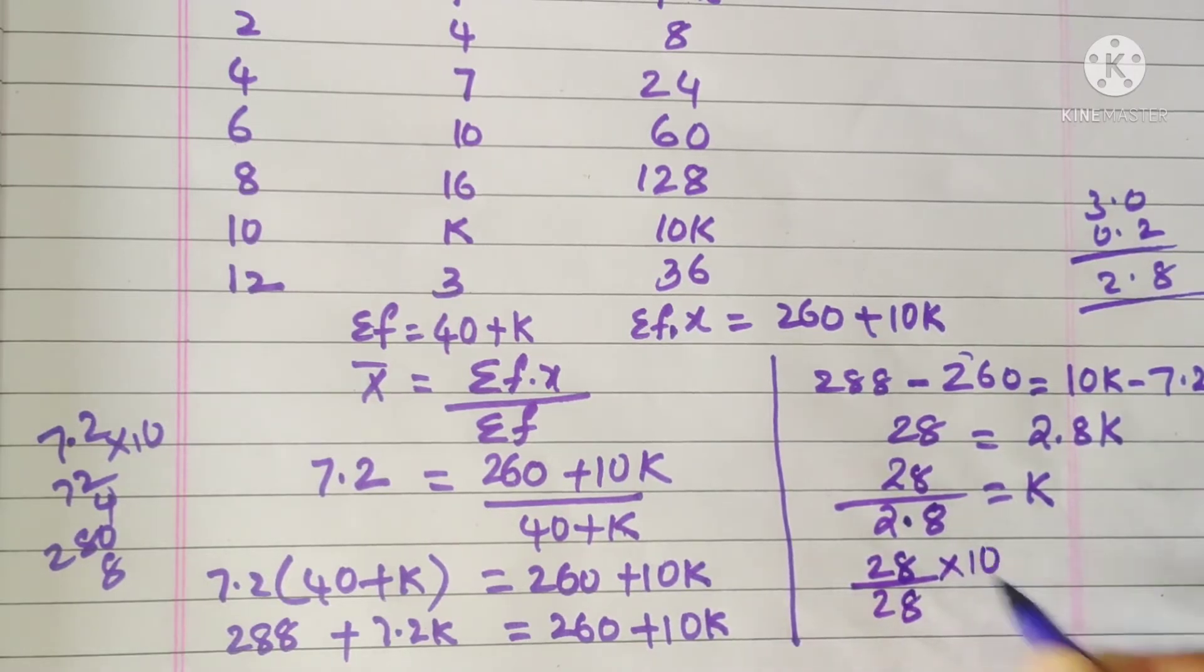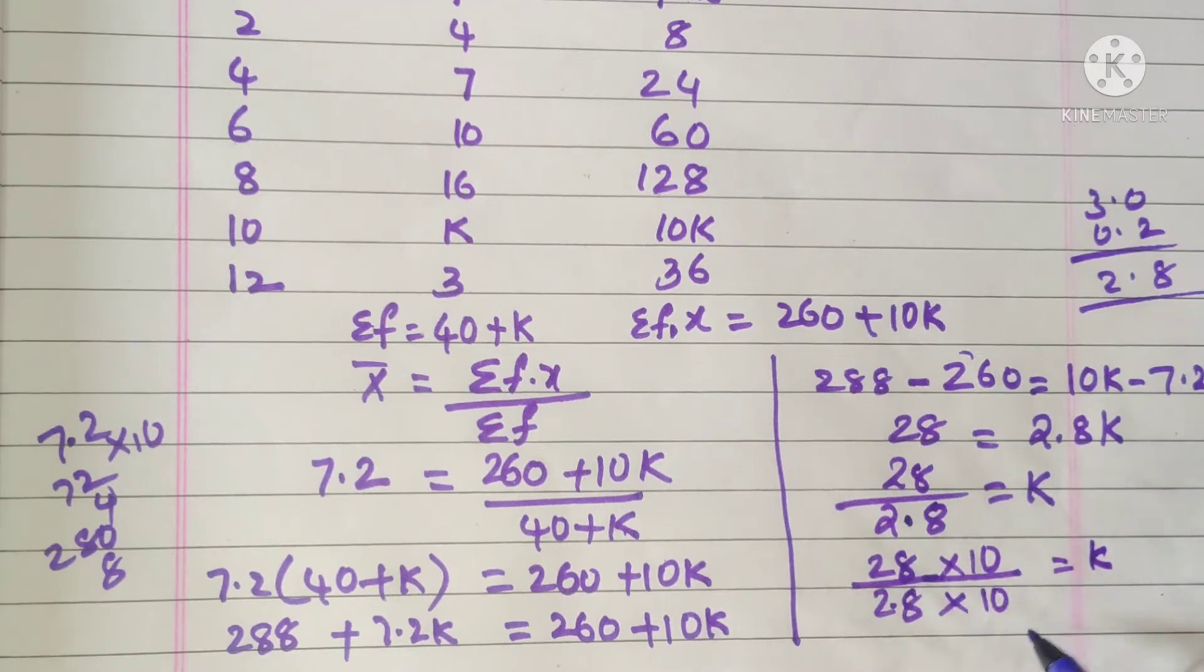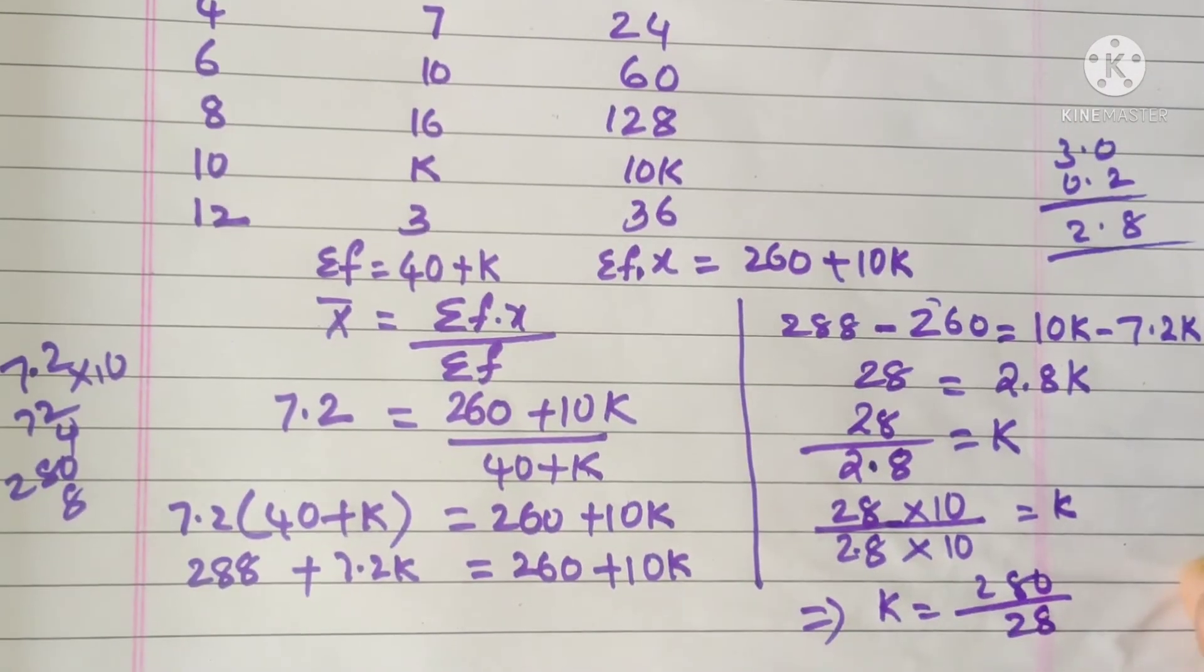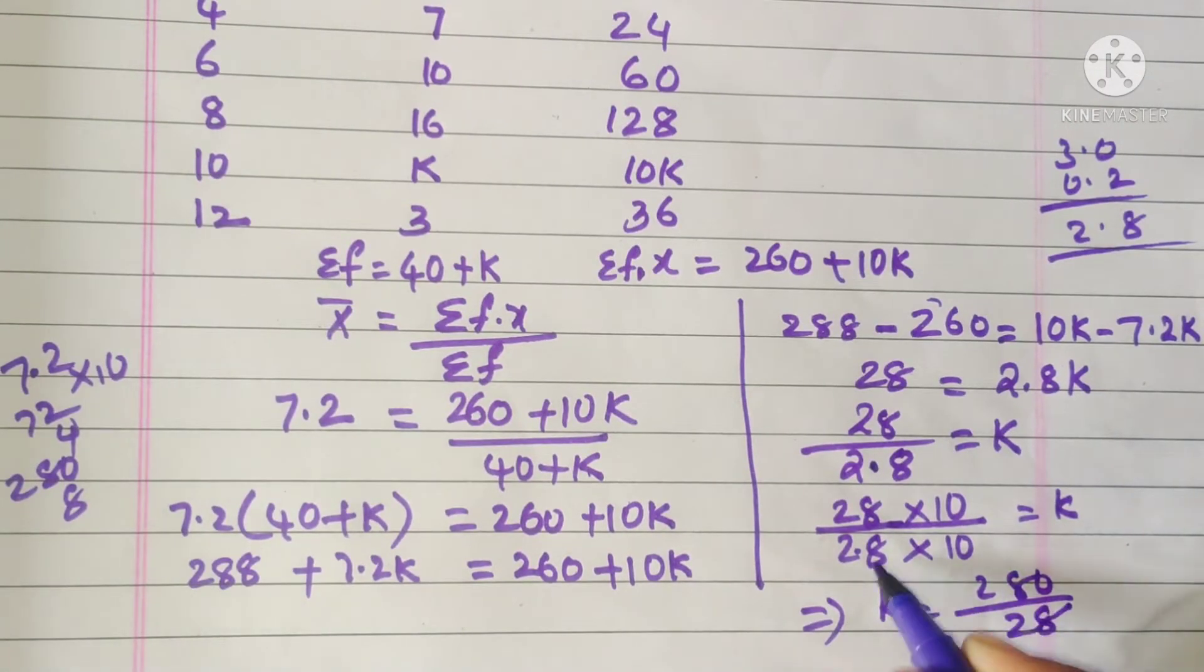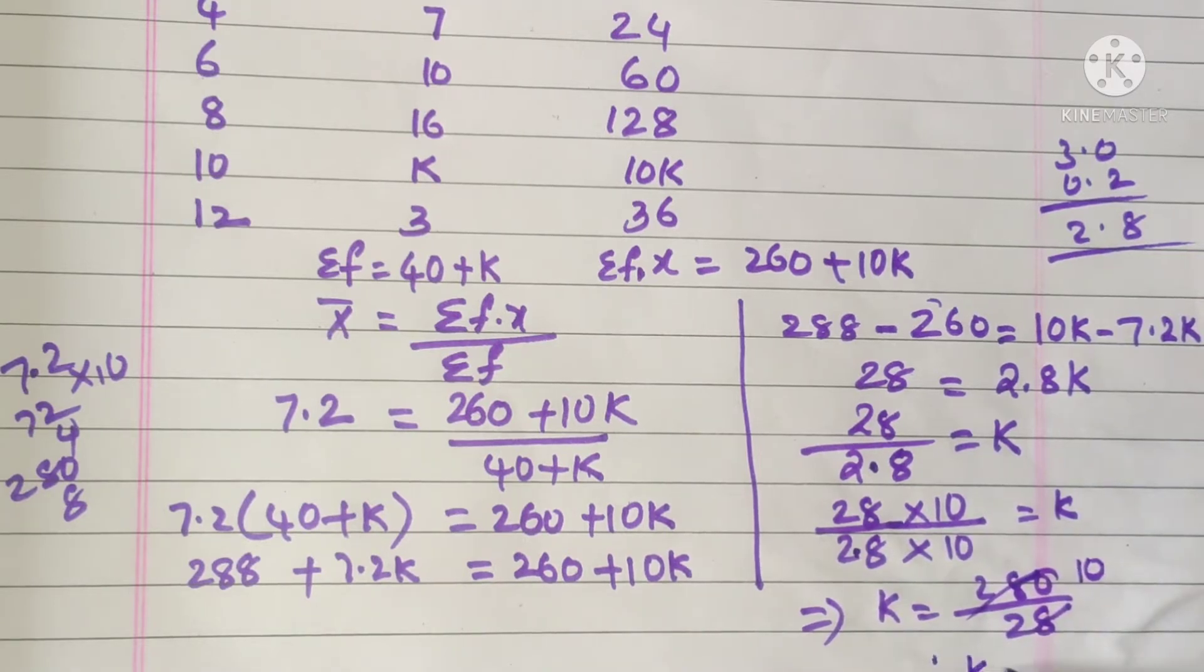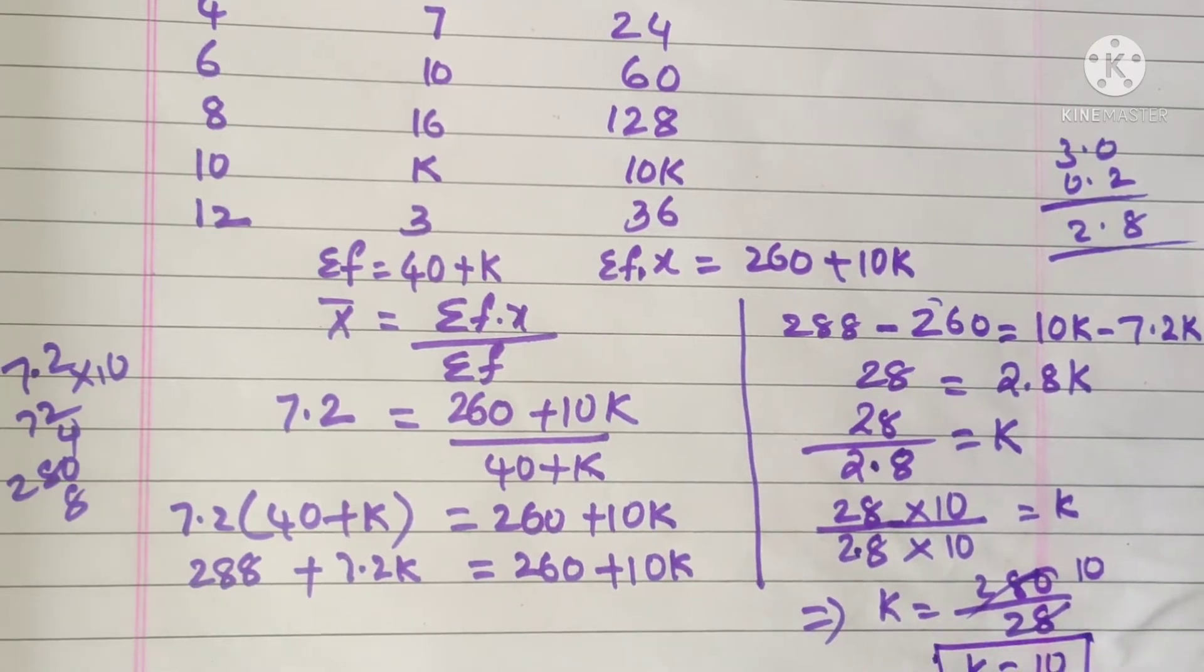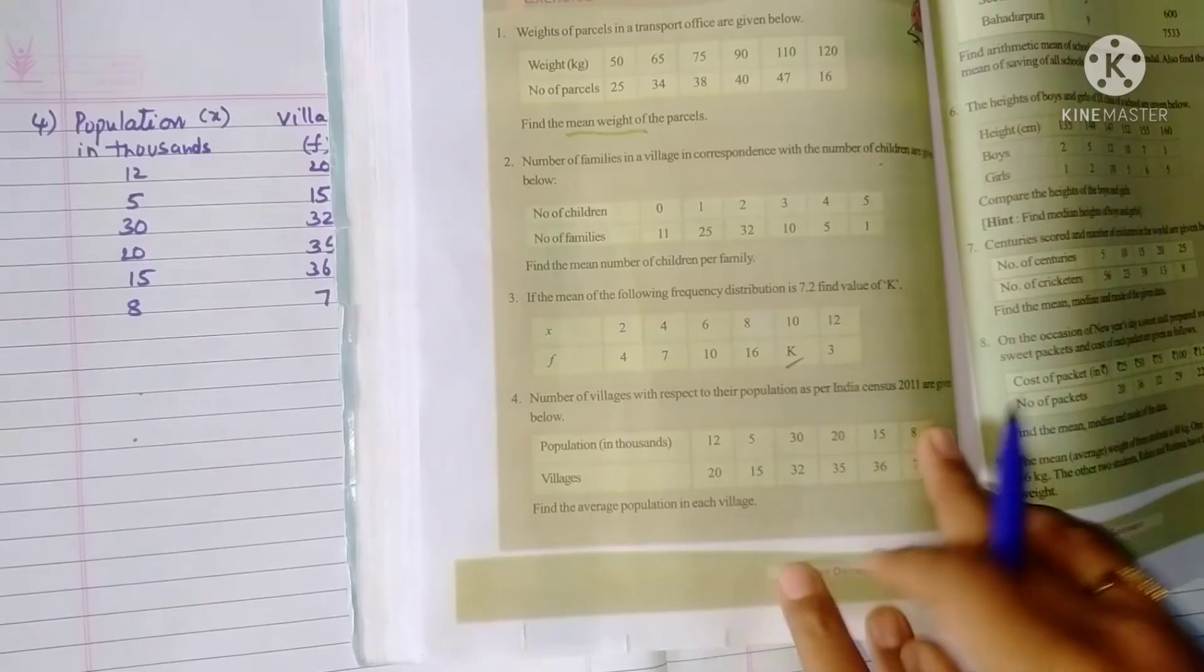Into 10, into 10 by... Now k value will be 280 by 28. Point will get removed now. So finally, what is the k value here? k equals 10.